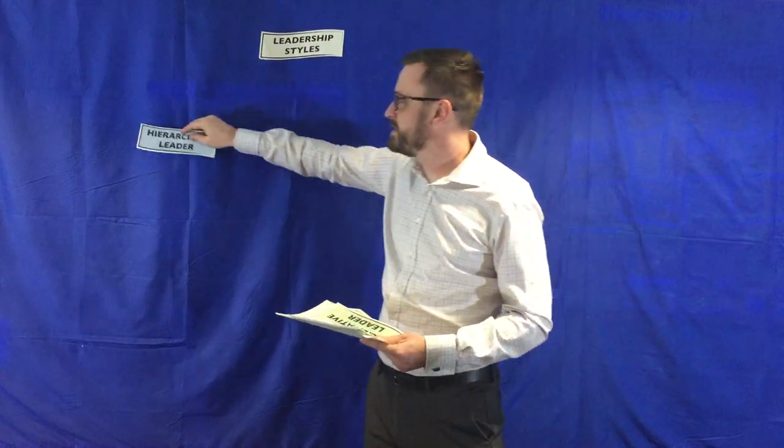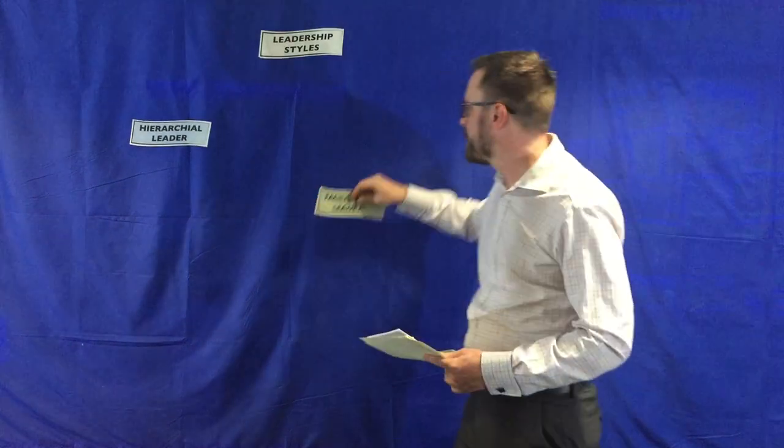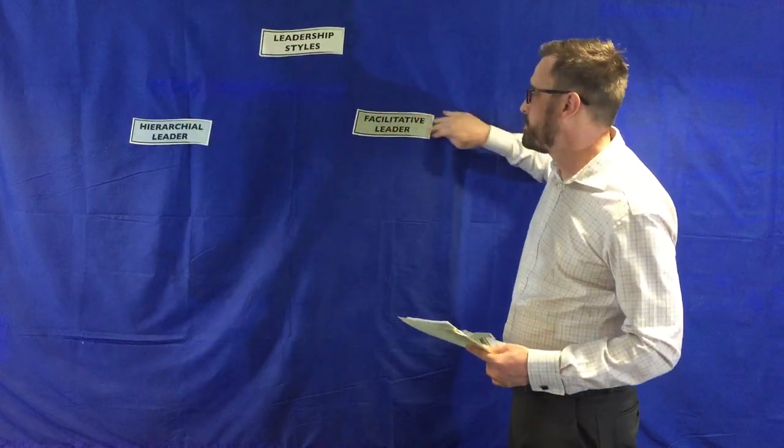On one end of the spectrum is the hierarchical leader—the traditional top-down model of leadership. On the other end is what we call the facilitative leader. At any given moment, you might find yourself here, or your organization might be over there. You might have an organization that thinks it's at this end but really wants to be there, or one that thinks it's here but is fooling itself and is actually down there.